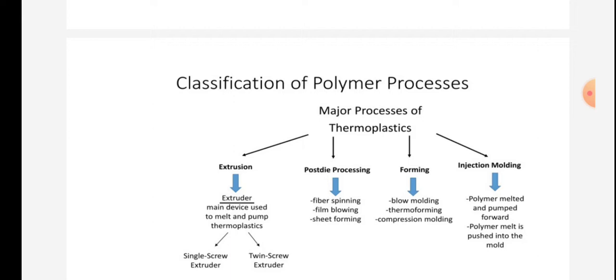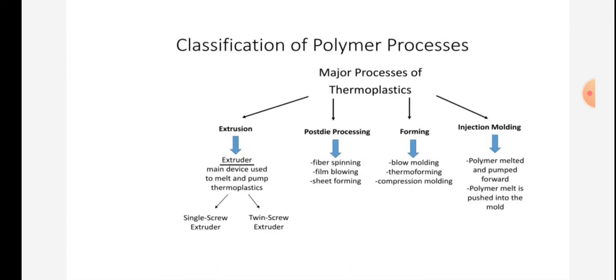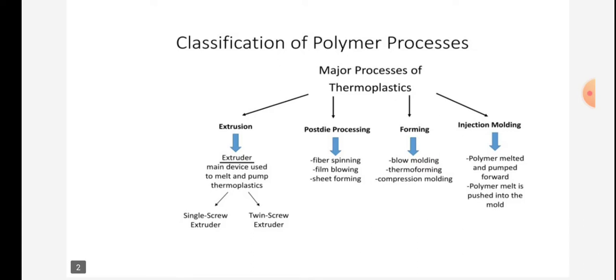post-die processing, forming, and injection molding. These are the subtopics of major polymer processes. Extrusion: the extruder is the main device used to melt and pump thermoplastics. In this there are two topics: single screw extruder and twin screw extruder. Post-die processing includes fiber spinning, film blowing, and sheet forming. Then forming process: blow molding, thermoforming, compression molding.